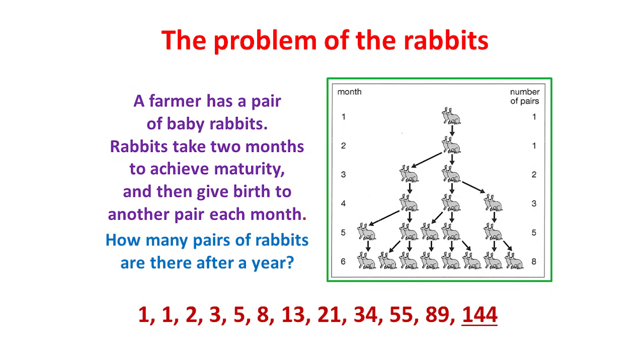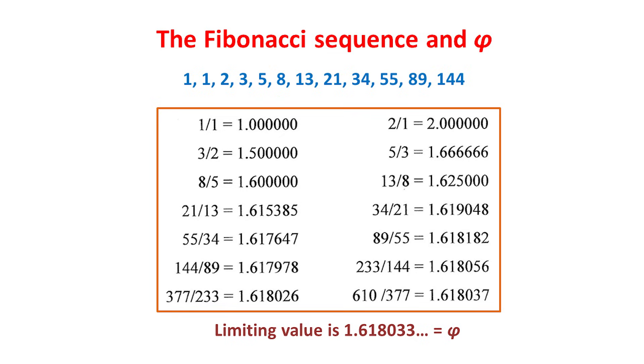Interestingly, Fibonacci seems to have had no particular interest in this problem, and it didn't become popular until the 19th century. But what has all this to do with the golden ratio? In the early 17th century, Kepler considered the ratios of successive Fibonacci numbers, and these ratios appear here in two columns. 1 over 1, 2 over 1, 3 over 2, 5 over 3, and so on. And as he discovered, and as you can see, the ratios in the left-hand column gradually increased towards the golden number, while those on the right decrease towards it, with their common limiting value being phi.